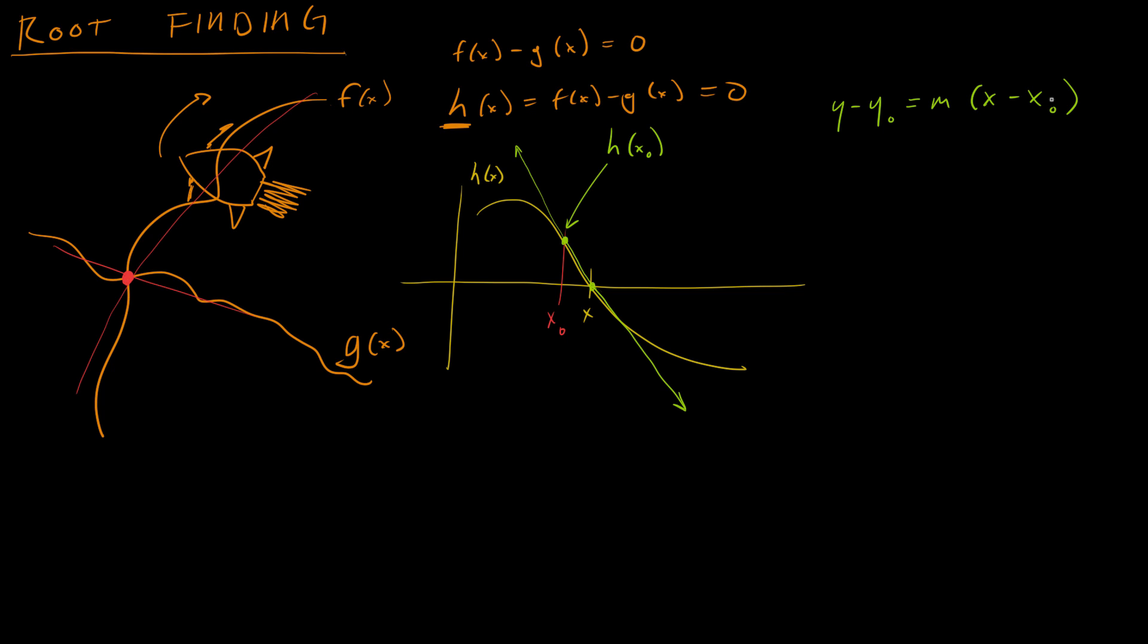So the idea of this formula is we have a point, x naught, y naught, and we have a slope, m. And we can make an equation for this green line using this formula by just plugging in our slope and plugging in our point.